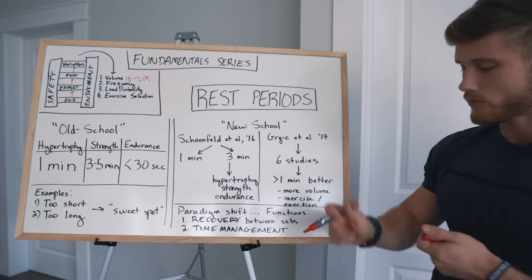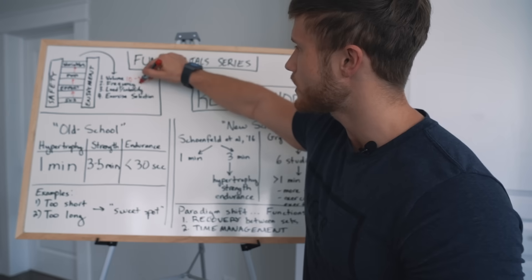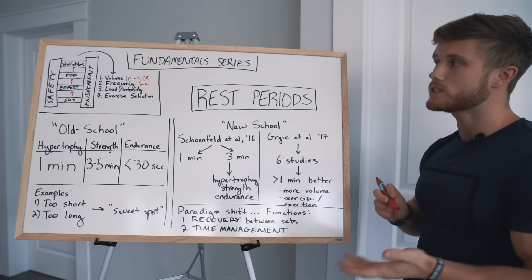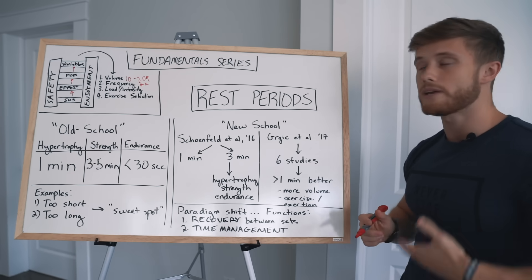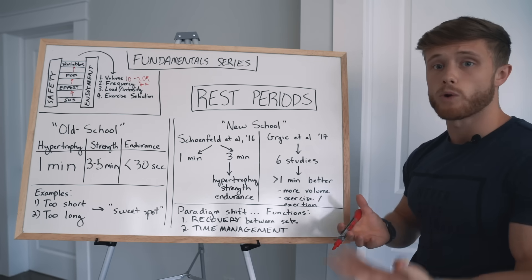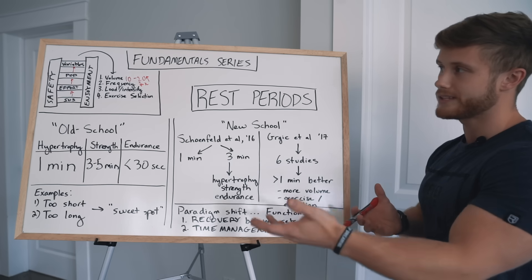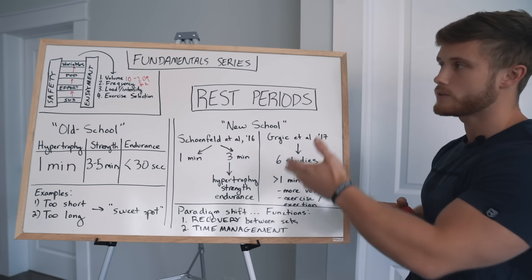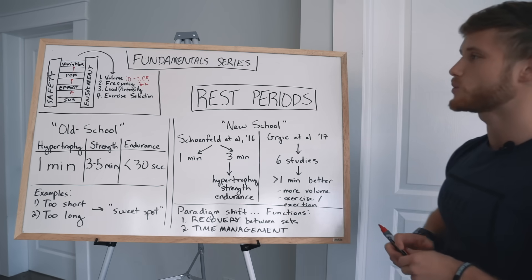When it comes to frequency, we've said that training each body part twice per week is better than only training each body part once per week. Frequencies of three or more may or may not be better. If they allow you to perform more volume, then perhaps they could lead to more hypertrophy. But if volume is equal, the best we know is that two times a week is better than once a week.